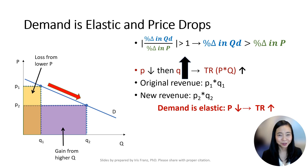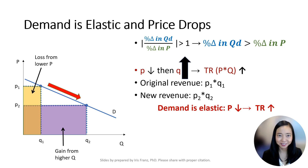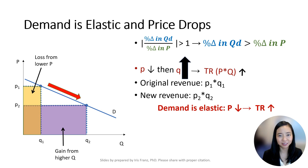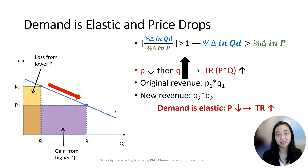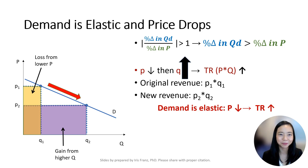In the exam, don't always bother to draw a diagram of demand and supply curves. Instead, just draw the arrows and compare their sizes. Tell yourself that the larger arrow will dominate the direction of total revenue. In this case, the quantity demanded goes up and total revenue rises.